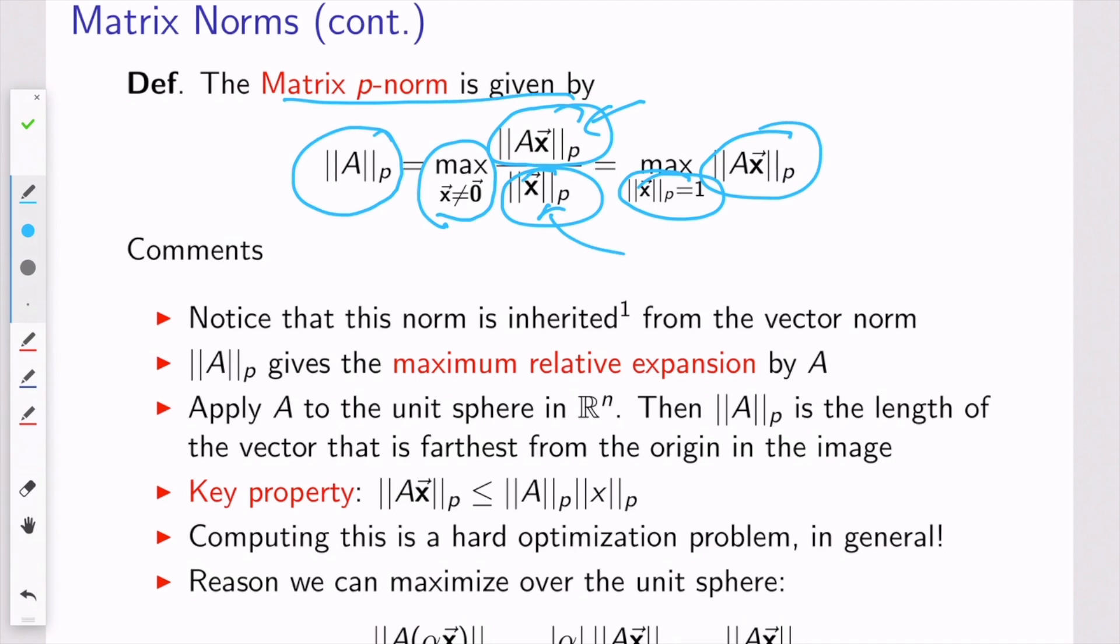So what this is telling you is, you know what matrix multiplication is. It's kind of giving us a measure of how A expands the vector x, because when you multiply a matrix by a vector, you potentially reflect, you rotate, those don't really change the length of a vector, but then you expand or contract.